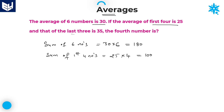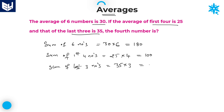And the average of the last 3 is given as 35. Therefore, sum of the last 3 numbers is equal to 35 into 3, which is equal to 105.